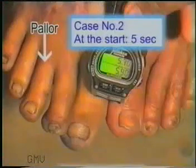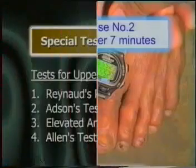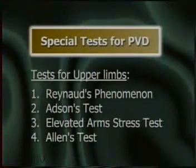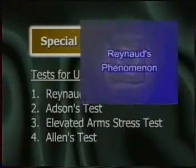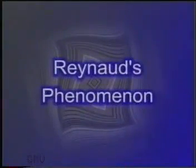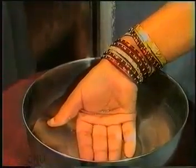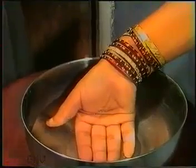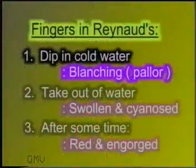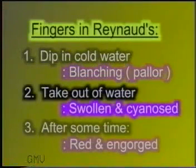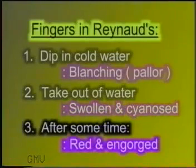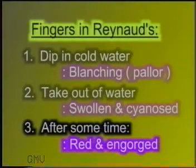Now we will come to some special tests for examination of chronic ischemia in the upper limbs. The Raynaud's Phenomenon test: if you are suspecting Raynaud's phenomenon, dip the fingers of both hands in ice-cold water and watch for blanching or pallor of the fingers. If the fingers become blanched, take the hands out of the cold water. The fingers will become swollen and cyanosed, and gradually, as the spasm of the arteries wears off, they become red and engorged due to flow of blood in the dilated capillaries.